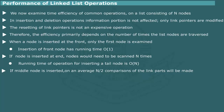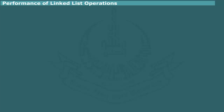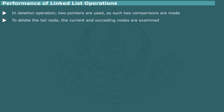If a middle node is inserted, on average N/2 comparisons of the linked parts will be made. Thus, the efficiency of inserting a middle node is O(N/2), or equivalently O(N). The deletion operation essentially involves the same steps as insertion, except that two pointers are used. Thus, in general, two comparisons are made, and the deletion of a tail node has efficiency O(2N), or simply O(N) ignoring the multiplicative factor.